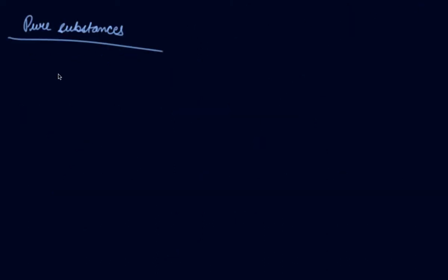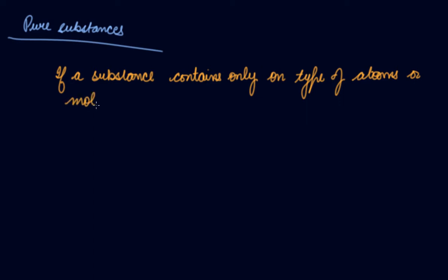Pure substances. Now, if a substance contains only one type of atoms or molecules, then it is called a pure substance, that is oxygen. Oxygen is made up of O2, that is two atoms of oxygen. So it is a pure substance which contains only one type of atoms or molecules. Nothing else is involved in it.